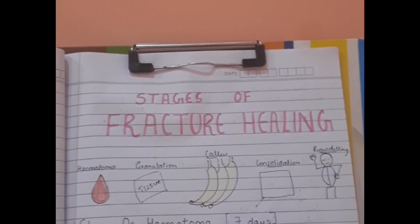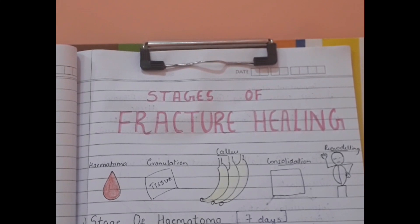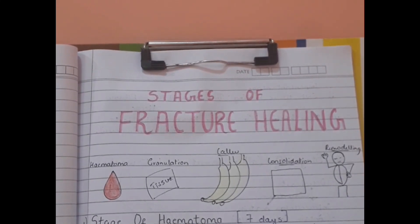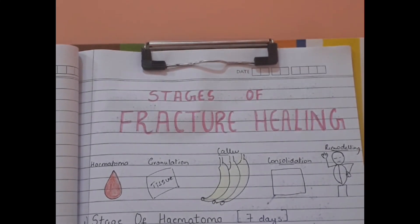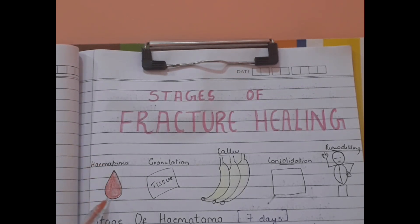There are five stages of fracture healing: the stage of hematoma, stage of granulation tissue, stage of callus formation, stage of consolidation, and stage of remodeling. Let's see how to remember these stages.